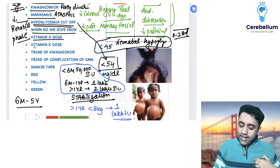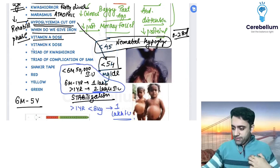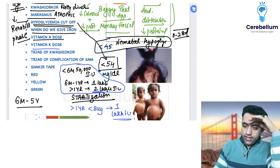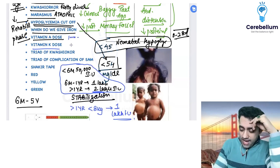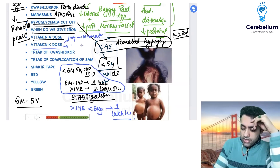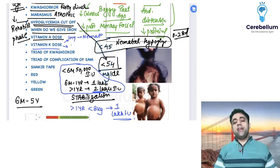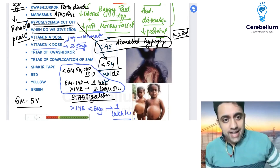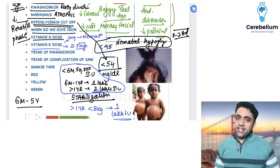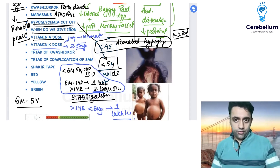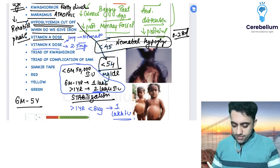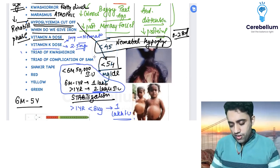For Vitamin K dosing: neonates receive 1 mg, while SAM babies (six months to five years) receive 2.5 mg, as they are older and require a higher dose. The triad of Kwashiorkor and the triad of SAM complications are not important for the exam.